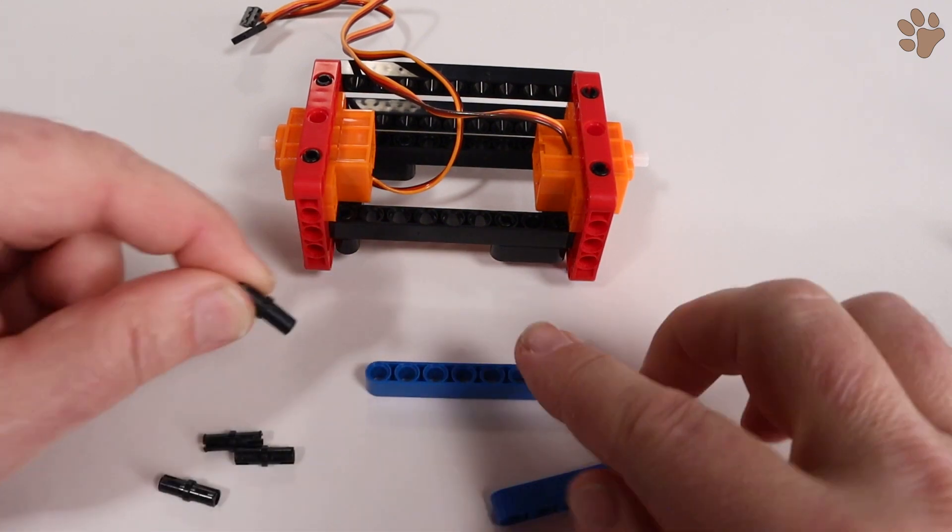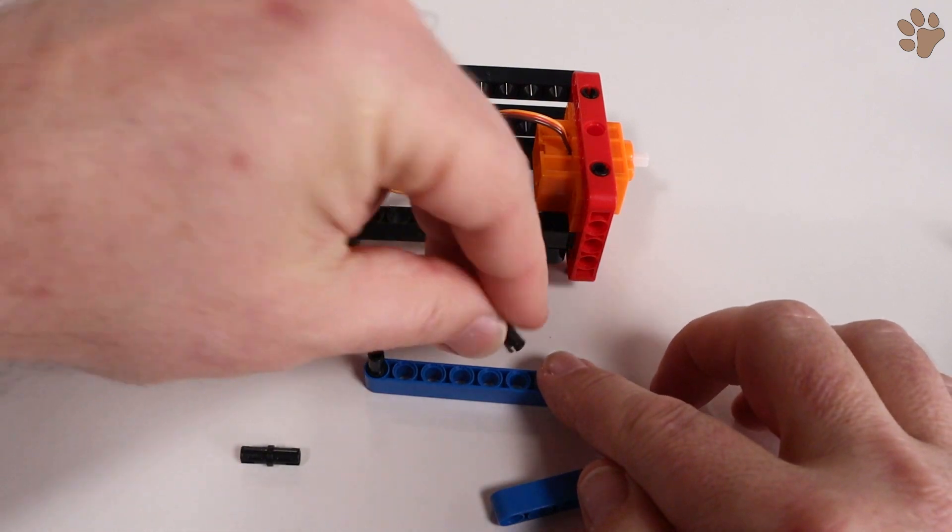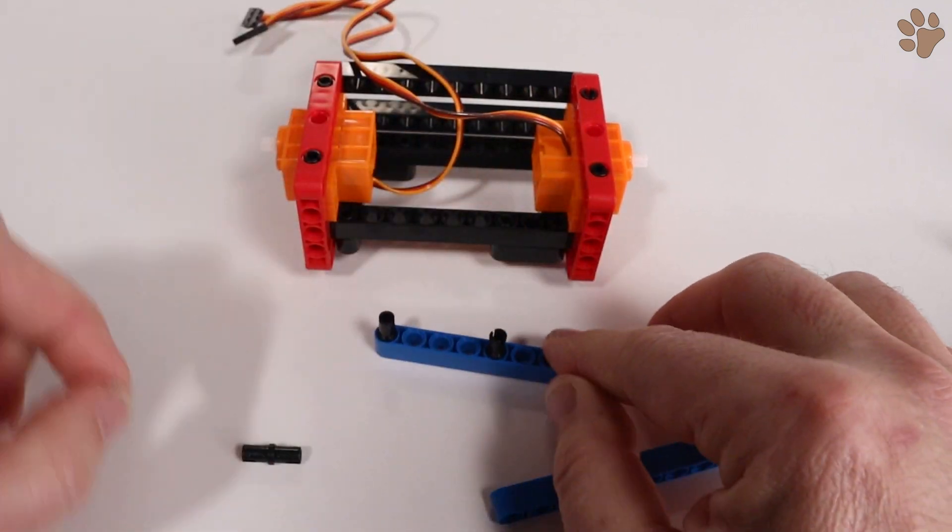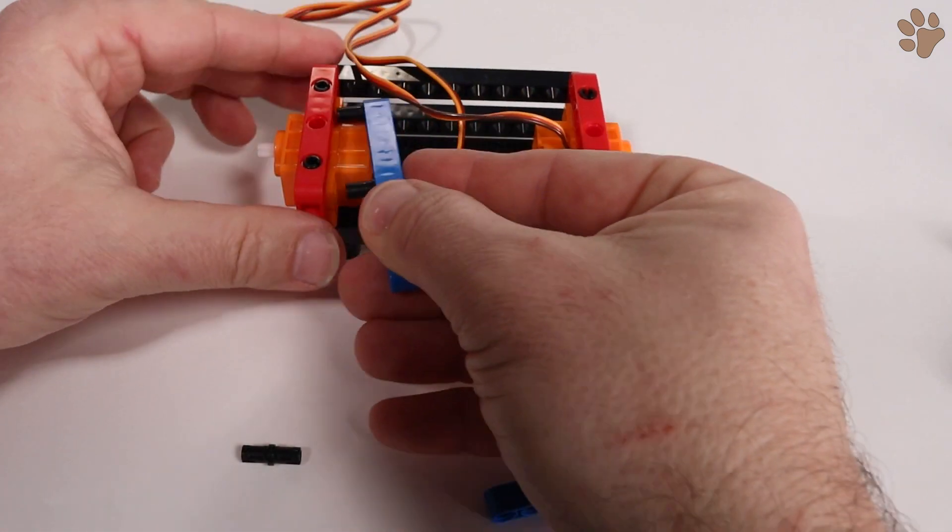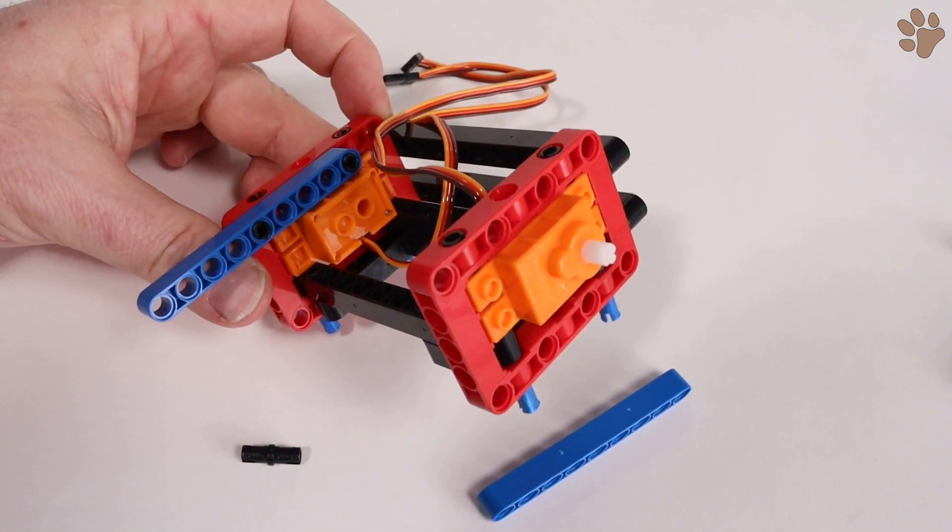We're going to attach these blue beams. Insert a black pin into the first and fifth holes of the blue beam. Then snap it in place into the red frame. The two points of contact make sure it's nice and solid.